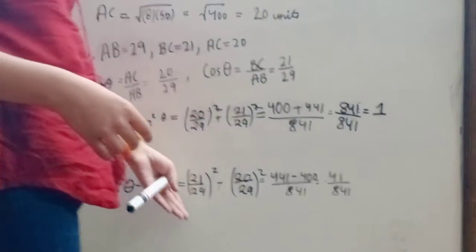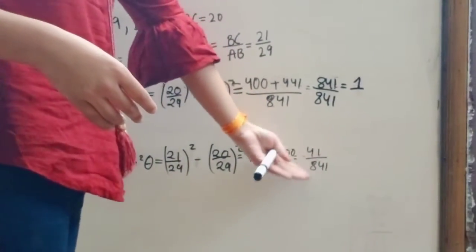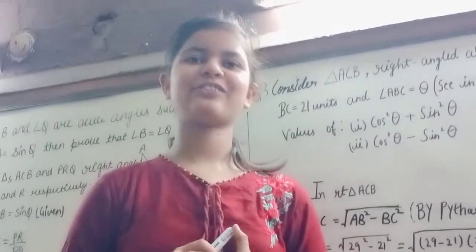Cos square theta minus sin square theta we get 41 upon 841. Thanks for joining.